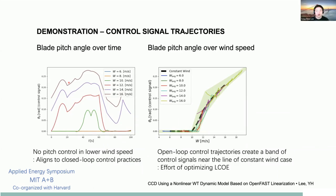Looking at control signal trajectory results: on the left, blade pitch angle over time shows no active pitch control at lower wind speeds, but active pitch control at higher wind speeds. On the right, plotting pitch against wind speed shows that open-loop control trajectories form a band around the constant wind speed case, illustrating the optimizer's effort to minimize LCOE by deviating slightly above or below the constant wind speed trajectory.